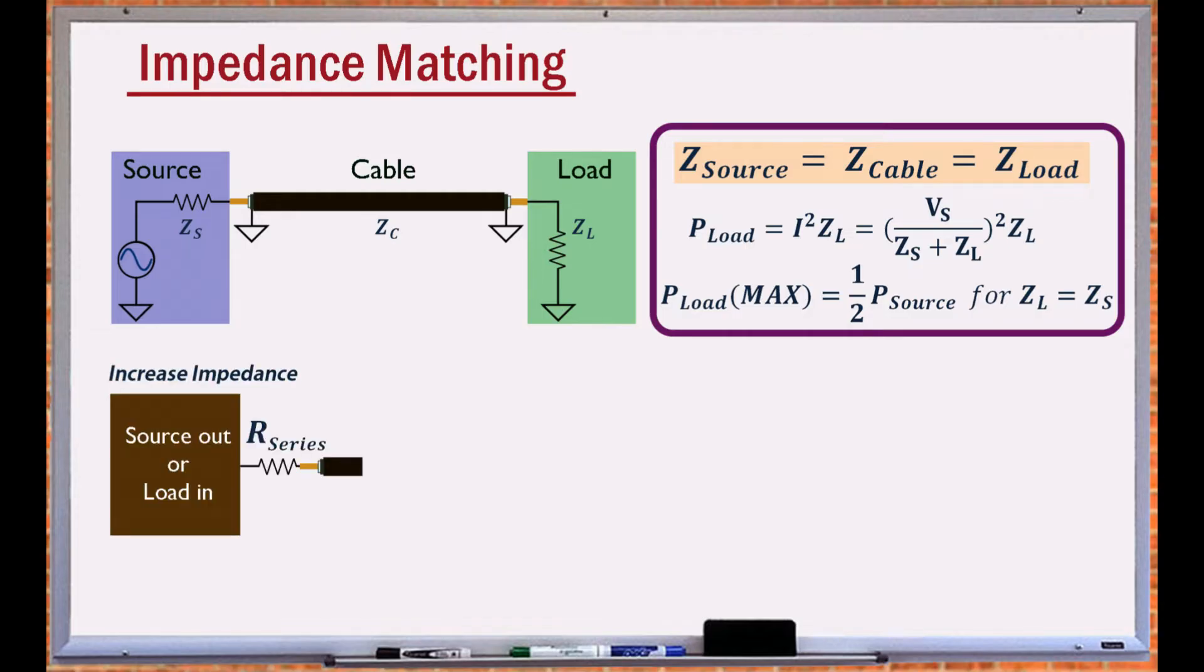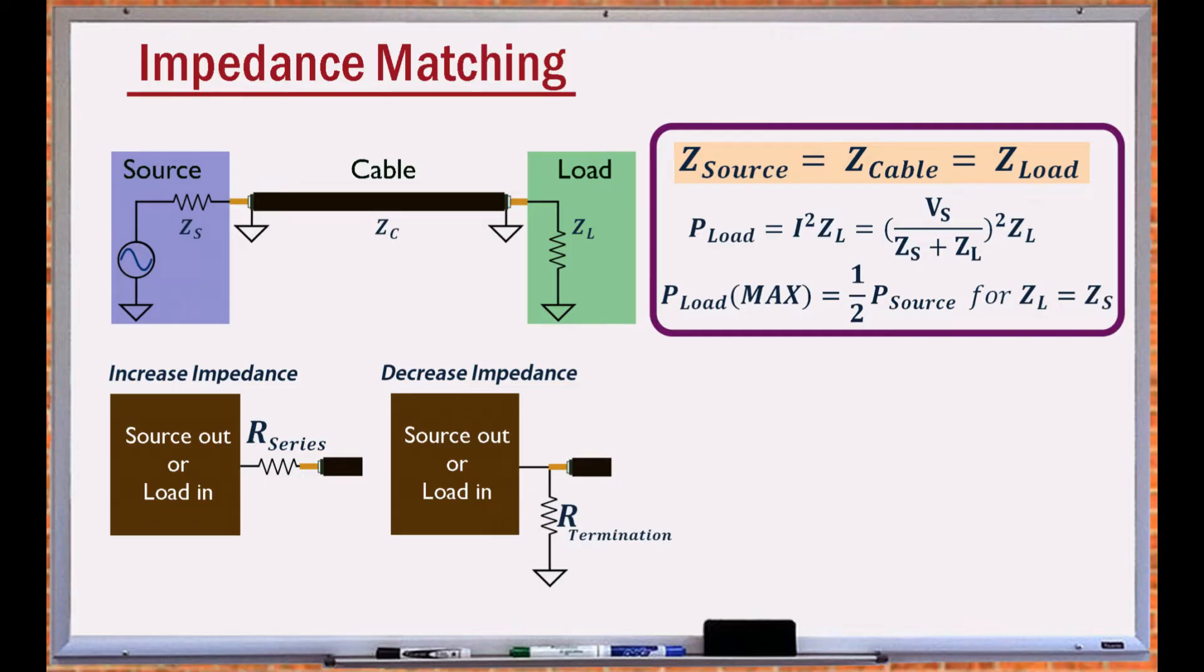Adding a resistor in series with the source or the load, or using a termination resistor is a basic method to achieve impedance matching.